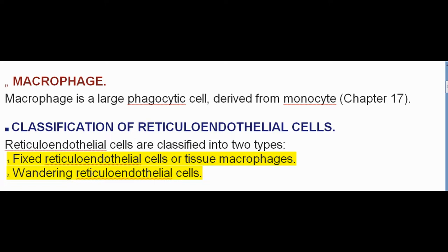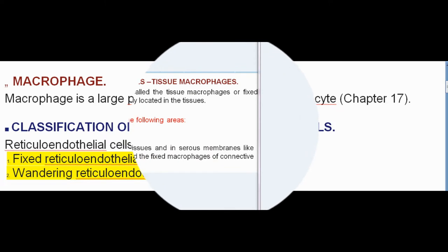Classification of reticuloendothelial cells: Reticuloendothelial cells are classified into two types — fixed reticuloendothelial cells, or tissue macrophages, and wandering reticuloendothelial cells.